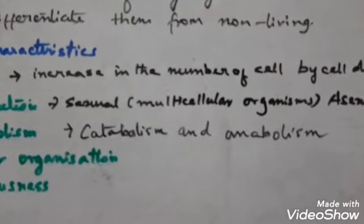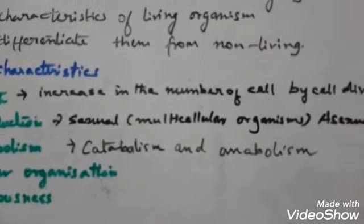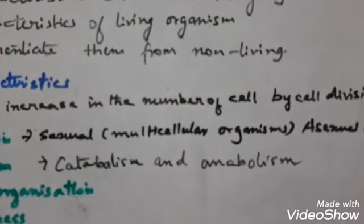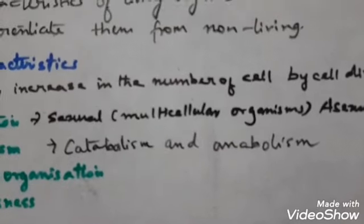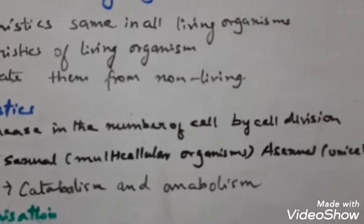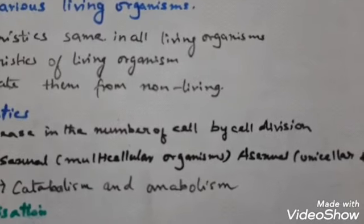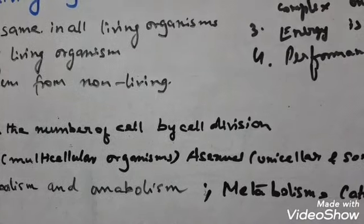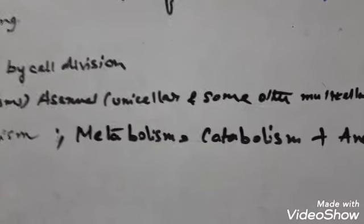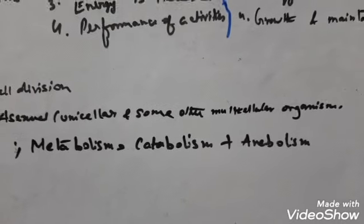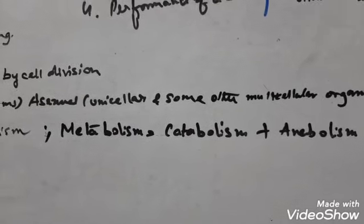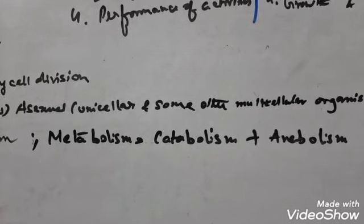Catabolism means the destructive reactions that occur continuously in our body. Anabolism is the constructive reactions taking place in our body. For example, photosynthesis is an anabolic process where food is synthesized, while respiration is an example of catabolism, where glucose is broken down in the cell to produce energy. So metabolism is the sum total of catabolism plus anabolism.